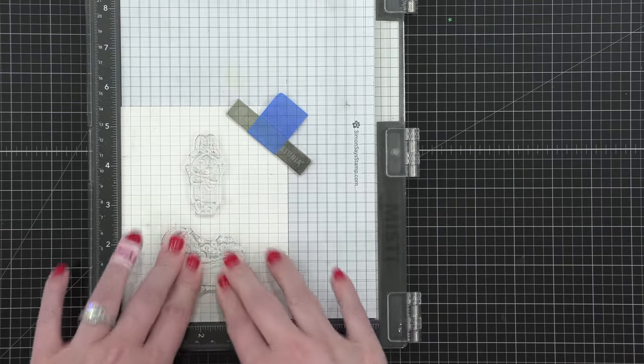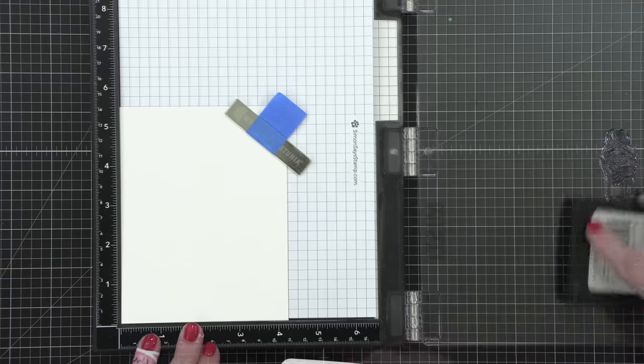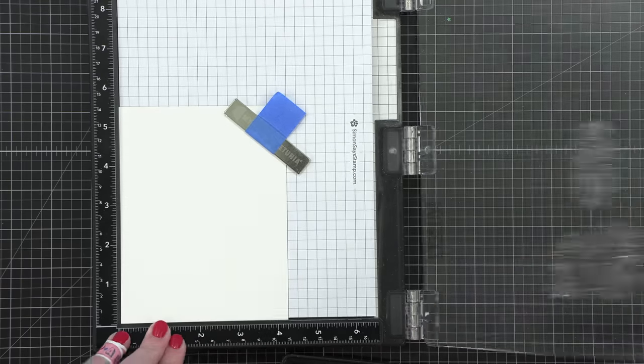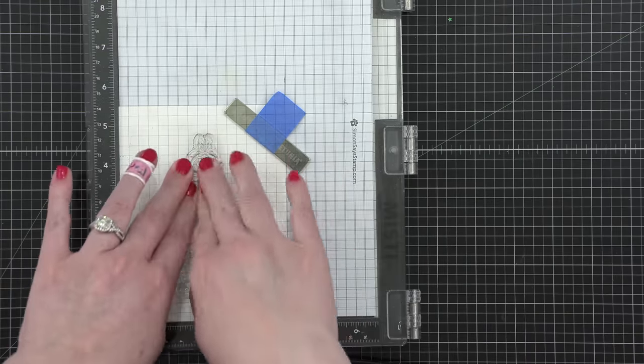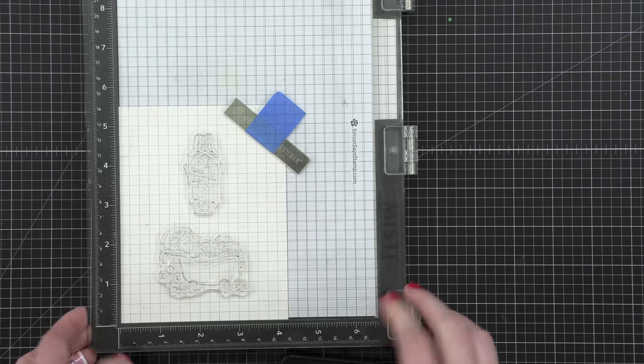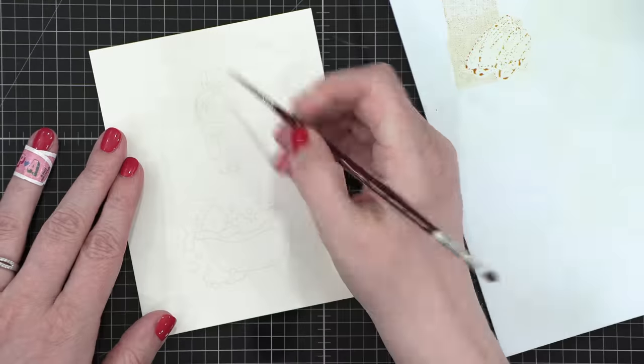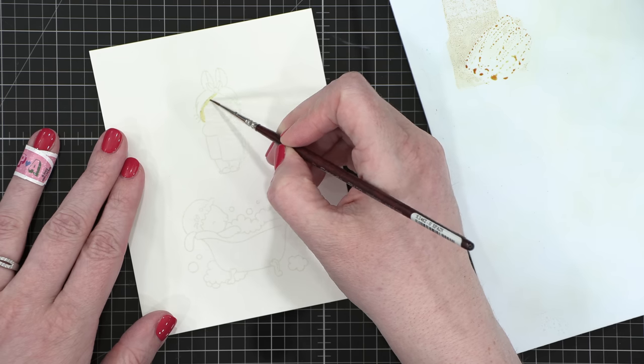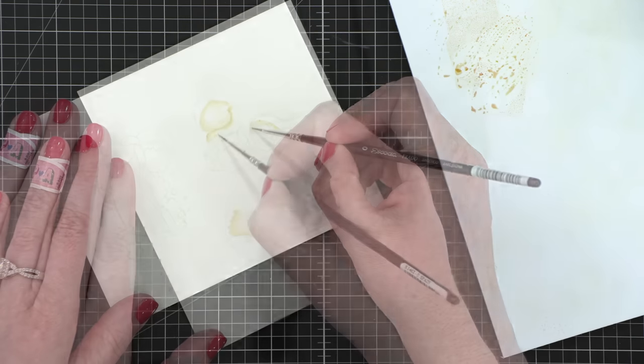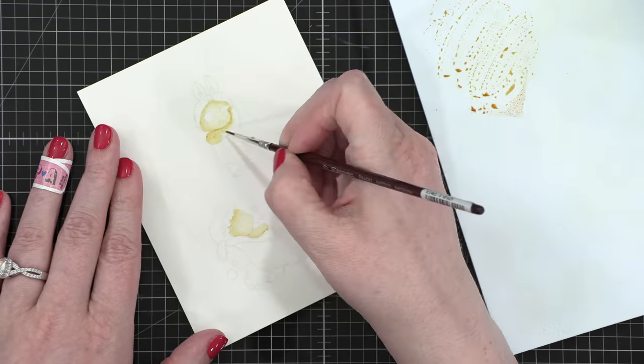But I'm using some no-line coloring ink from Honey Bee and I actually stamped the images twice so that I would have an easier time seeing all the lines that are stamped. One stamping is probably good enough for most applications but I wanted the lines to show up a little bit better on camera.